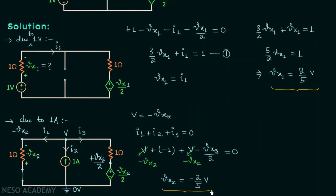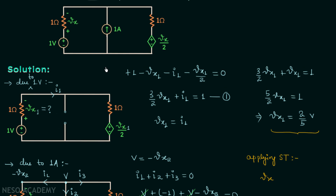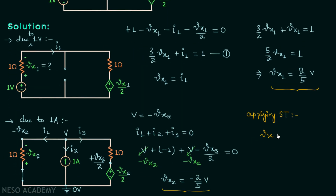We have obtained the voltage across the resistor due to the 1 ampere source. Now applying the superposition theorem: Vx equals Vx1 plus Vx2. Vx1 is 2 over 5 and Vx2 is minus 2 over 5. Therefore Vx equals 0 volts. This is our final answer.